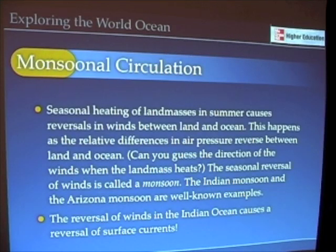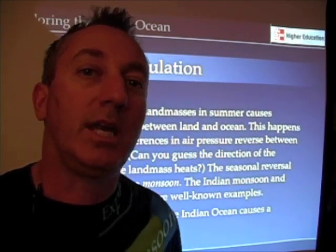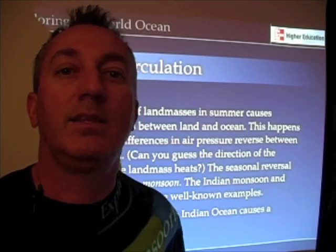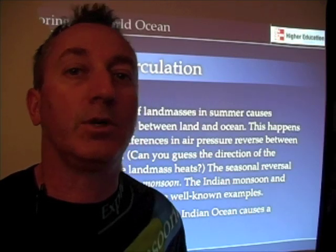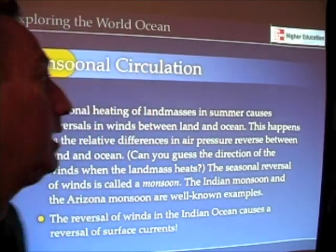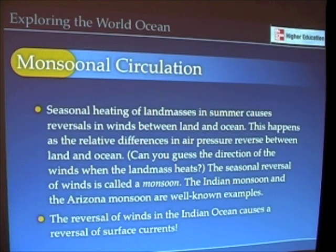The monsoonal circulation is both an atmospheric and an oceanic circulation. Though it's more meaningful in terms of oceanography in the Indian Ocean, it actually has a counterpart here in the southwestern United States — the Arizona or southwest monsoon. And though it doesn't change current directions, it's an interesting atmosphere-ocean phenomenon worth a quick look at. Heating of landmasses in the summer, both in India and in Arizona, causes differences in air pressure between the land and the ocean, causing air to rise and flow towards the land.